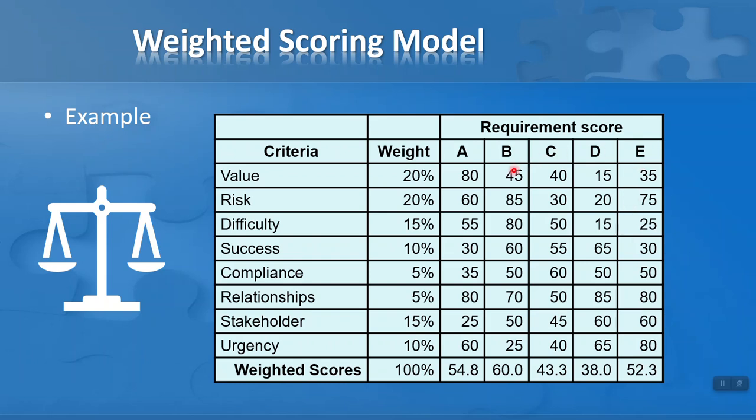Each requirement scores differently in each area. While requirement A scores very high on value, it only scores 25 for stakeholder. Requirement D scores very low on value but very high on relationships. It's hard to know which to choose without weighting. So I multiply the weightings by the scores for each solution. For solution A, I multiply 20% by 80 for value, plus 20% by 60 for risk, plus 15% by 55 for difficulty, and so on. This gives a total weighted score of 54.8 for requirement A.